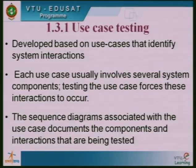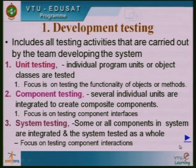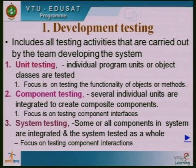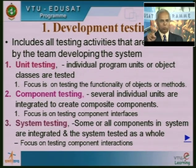Sequence diagrams, another diagram associated with use case documents, document the components and interactions being tested. Based on that we design our test cases such that all components appearing in the sequence are tested together and the behavior is still as expected. That basically completes what we wanted to do in terms of development testing — namely unit testing, component testing, and system testing. During development, we first develop units, put them together into components, and then put all components together into a full system. Accordingly, the testing also follows: unit testing, component testing, and system testing, all part of development testing.